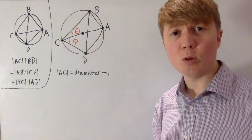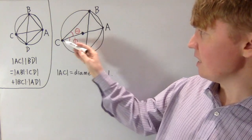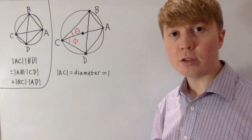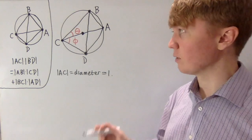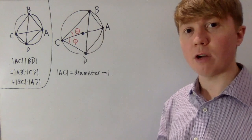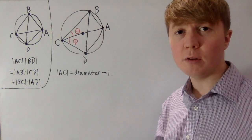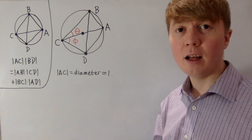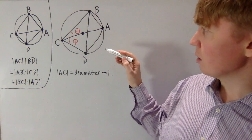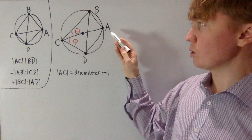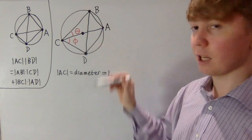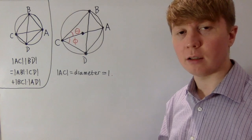The setup we need is that AC passes through the centre, so it is a diameter of the circle, and we're going to choose it so that the diameter has length 1. We've got our angles theta and phi, and we're going to try to prove the sine of theta plus phi identity. Because AC is the diameter, the angle at B is a right angle, and similarly the angle at D is also a right angle.